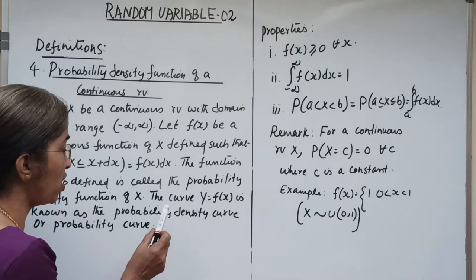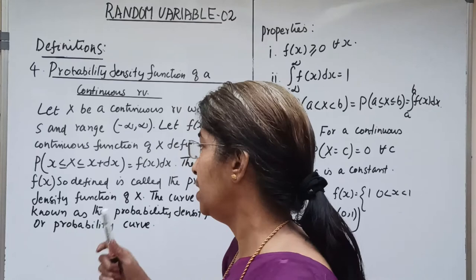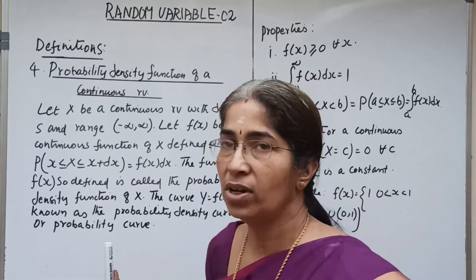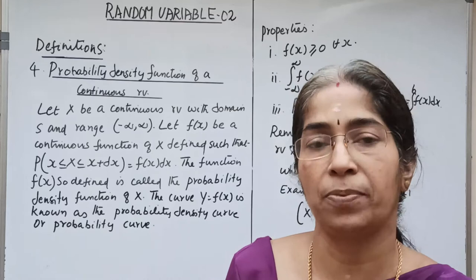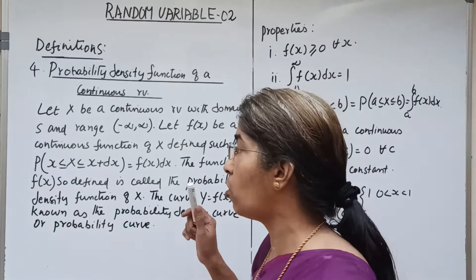The function f(x) so defined is called the probability density function of the random variable x, and the curve y equals f(x) is known as the probability density curve or the probability curve. In the case of a continuous random variable, the name is probability density function, whereas in the case of a discrete random variable, we use the PMF — probability mass function — which gives the probabilities of all values of x.